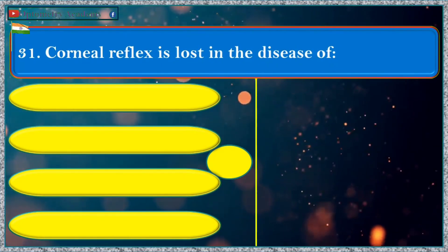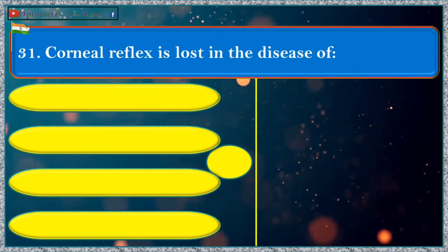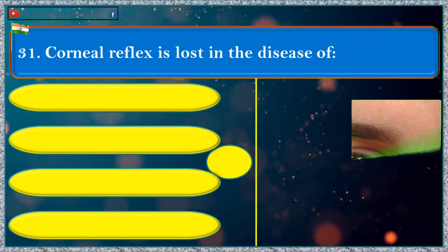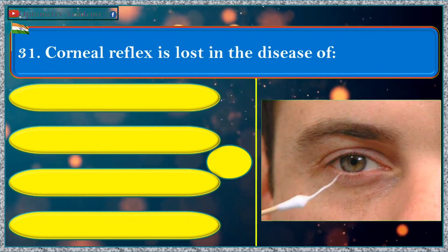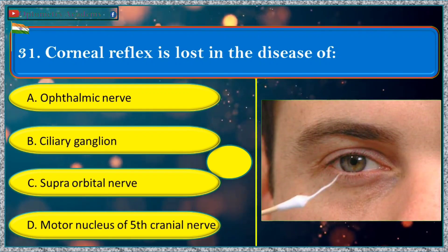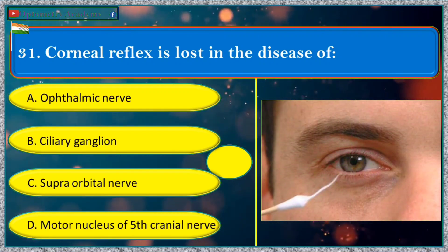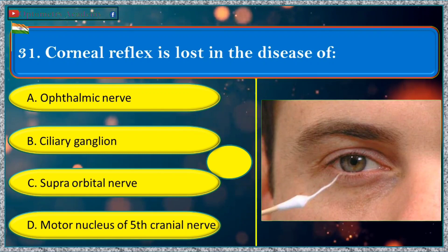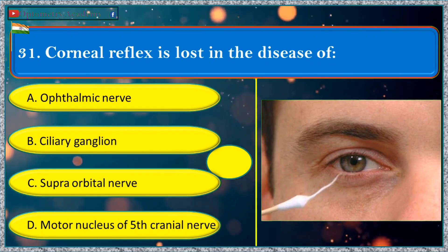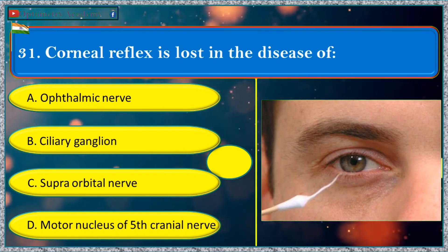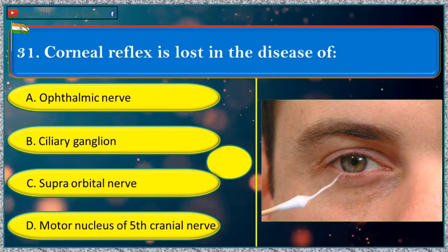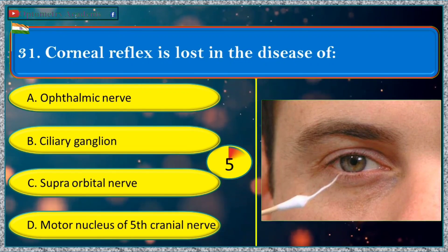Corneal reflex is lost in the disease of: a. ophthalmic nerve, b. ciliary ganglion, c. supraorbital nerve, d. motor nucleus of 5th cranial nerve.